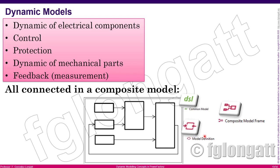The model definition is the smallest unit that you can use to create a DSL model. Then we have the graphic interface that compiles all the models and creates an object able to talk with DIgSILENT PowerFactory while providing a graphic user interface. What I need you to realize is that there are at least three basic kinds of objects: the composite model frame, the model definition, and the common model.